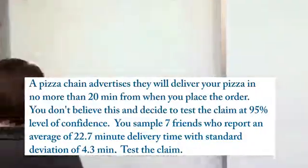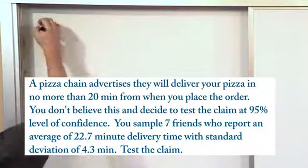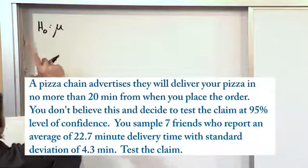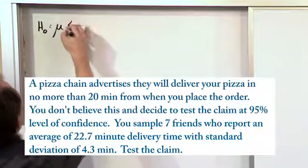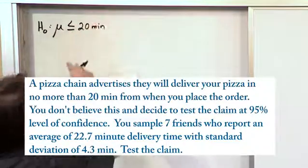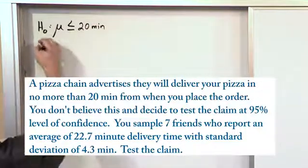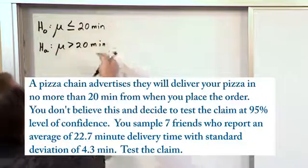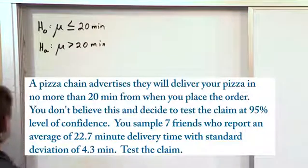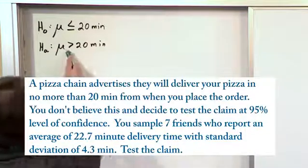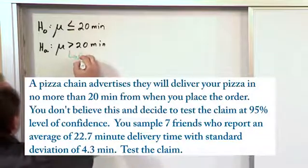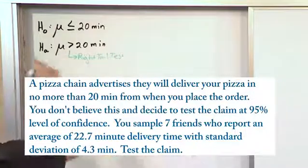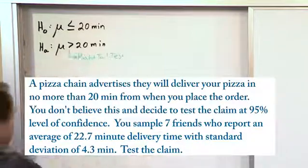Just like with all of these problems, we want to first write everything down — the most important thing being the null and alternate hypothesis. It is a mean because we're talking about delivery times. The null hypothesis says the pizza is delivered in no more than 20 minutes, meaning less than or equal to 20 minutes. The alternate hypothesis must be that the delivery time is greater than 20 minutes. These are opposites and together include every possible delivery time. Because of that right-hand arrow, you automatically know this is a right-tail test — just from the sign of the alternate hypothesis.